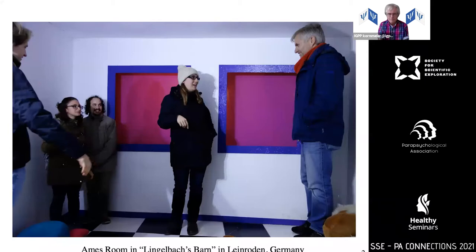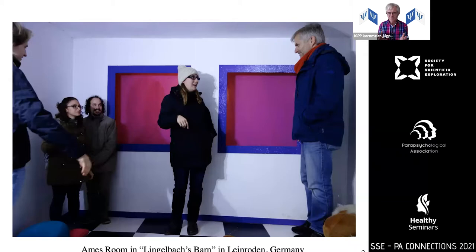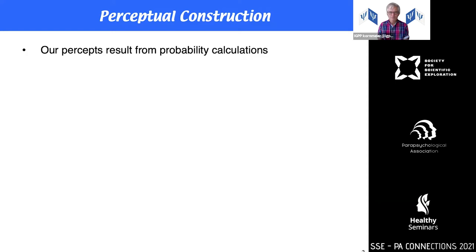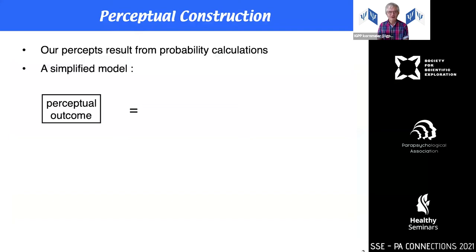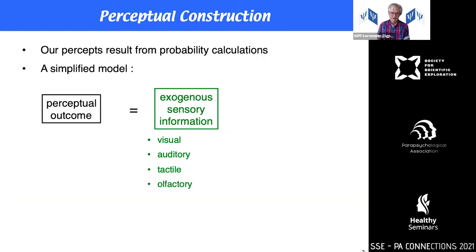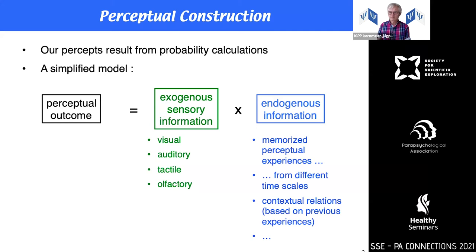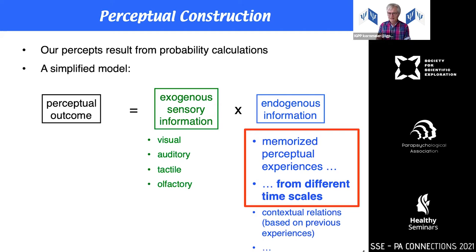Our everyday perceptual experience suggests that we see the world exactly as it is. However, the current view is that our percepts result from probability calculations. In a simplified model, the perceptual outcome is constructed by exogenous sensory information from vision, audition, tactile, or olfactory modalities, and this is weighted with endogenous information — memorized perceptual experiences from different time scales, contextual relations based on previous experiences, and so on.